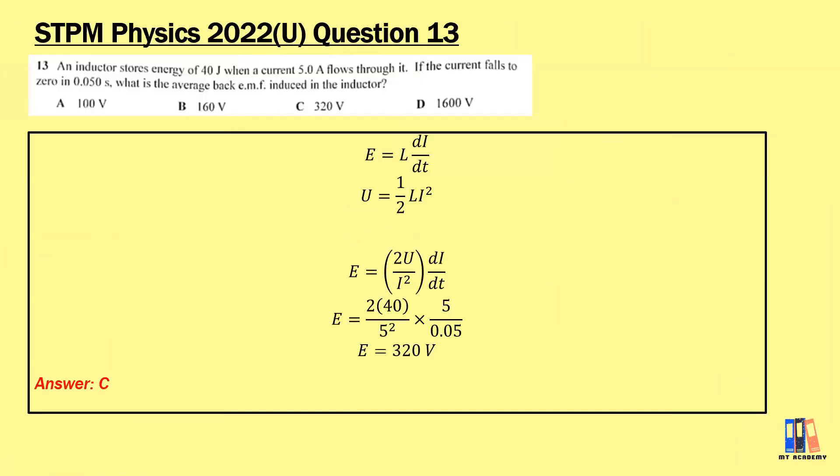We shall move on to the next question, Question 13. An inductor stores energy of 40 joules when a current of 5 ampere flows through it. If the current falls to 0 in 0.05 seconds, what is the average back EMF induced in the inductor? We have energy equals ½LI² and back EMF equals L dI/dt. We need to find the back EMF, but we don't have the self-inductance. We only have dI/dt, which is 5 ampere falling to 0 in 0.05 seconds. The information provided is the energy where we have U equals ½LI². So replace the L here with the formula, which equals 2U/I². We have the energy is 40 joules, current is 5 ampere. Just put in all those values and you can get the average back EMF equals 320 volts. Answer is C.